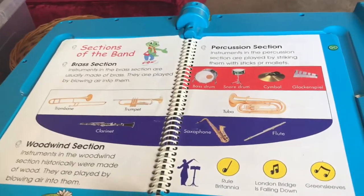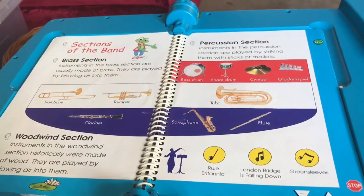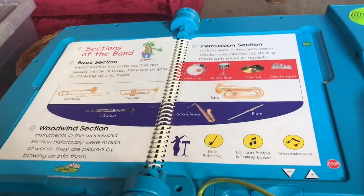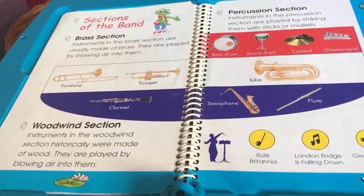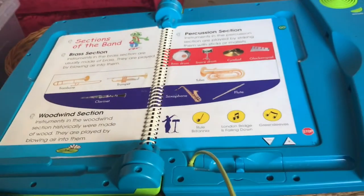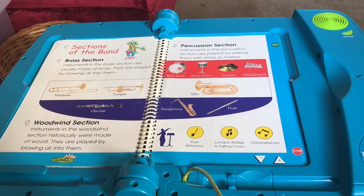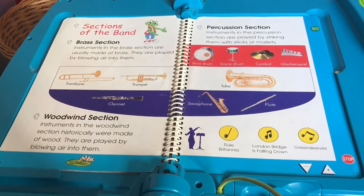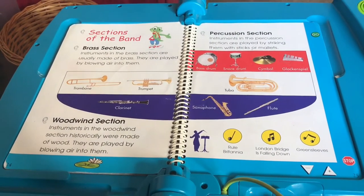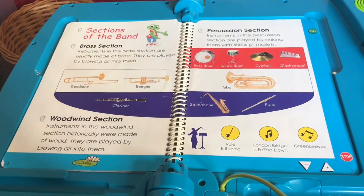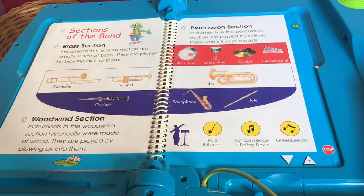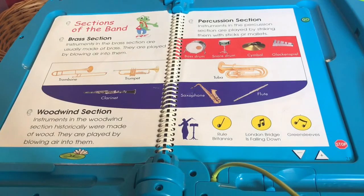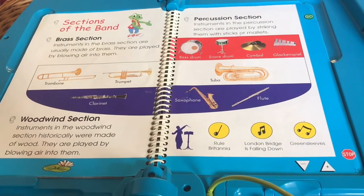Now I have to touch the sections so I can hear the music play together. Rural Britannia — touch an instrument or section to hear this song. The music plays together.